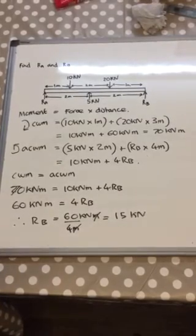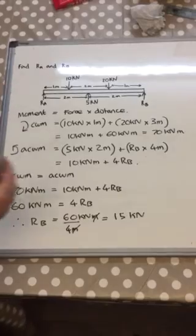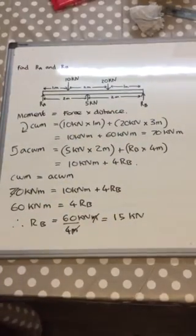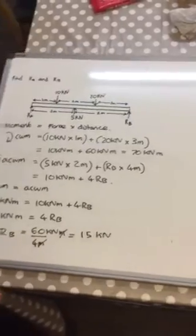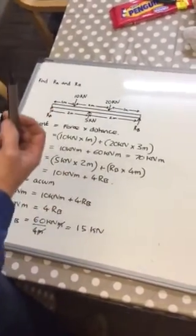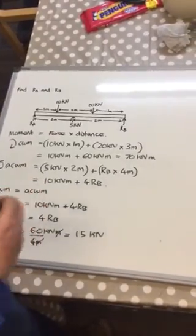So then you've got two possibilities now to work out Ra. You could either do the same by taking moments around the other end, or we could do a shortcut and we could say the upward forces must be equal to the downward forces as the beam is not moving.